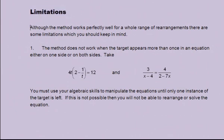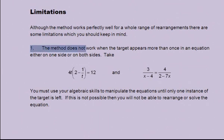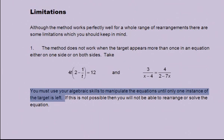Limitations. Although the method works perfectly well for a whole range of rearrangements, there are some limitations which you should keep in mind. 1. The method does not work when the target appears more than once in an equation. Either on one side or on both sides. Take 4t(2 - 1/t) = 12 and 3/(x - 4) = 4/(2 - 7x). You must use your algebraic skills to manipulate the equations until only one instance of the target is left. If this is not possible then you will not be able to rearrange or solve the equation.